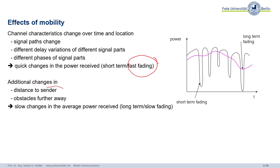Additionally, you might have a different distance to the sender over time. There might be some obstacles further away. So you also have some slow changes in average power, slow fading.